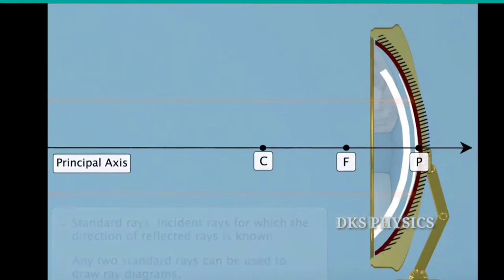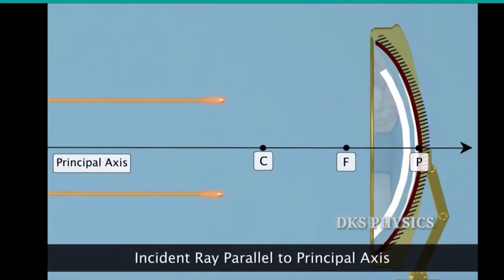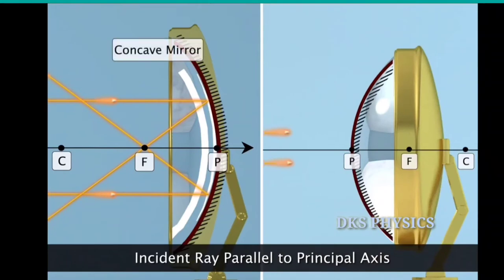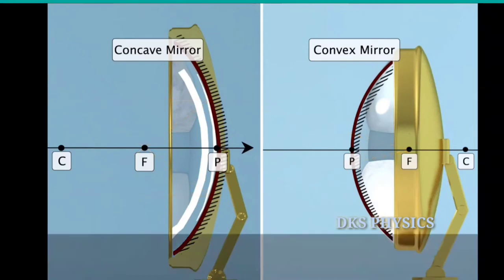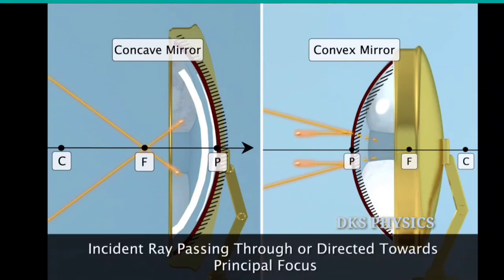An incident ray traveling parallel to the principal axis of a concave mirror will pass through the principal focus after reflection. In the case of a convex mirror, this ray will appear to diverge from the principal focus. An incident ray passing through or directed towards the principal focus emerges parallel to the principal axis after reflection.